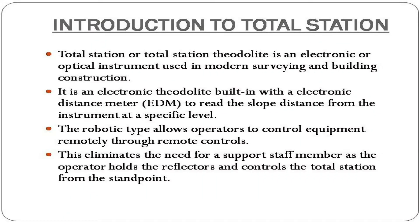Total Station, or Total Station theodolite, is an electronic or optical instrument used in modern surveying and building construction. It is an electronic theodolite built in with an electronic distance meter to read the slope distance from the instrument at a specific level. The robotic type allows operators to control equipment remotely, eliminating the need for support staff as the operator holds the reflectors and controls the Total Station from the standpoint.